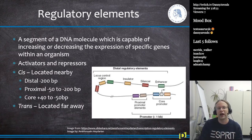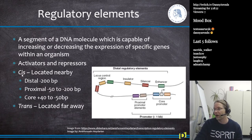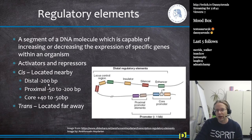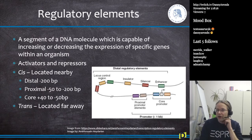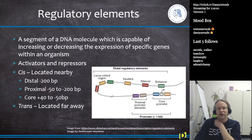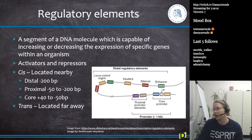Regulatory elements are generally defined as cis or trans. Cis means they are located close to the gene — roughly minus 200 to plus 40 or 50 base pairs relative to the gene. Trans-regulatory elements are located far away, and far away can even mean on a different chromosome.